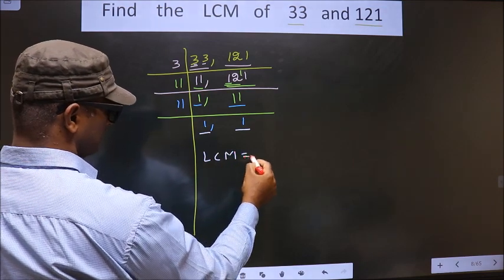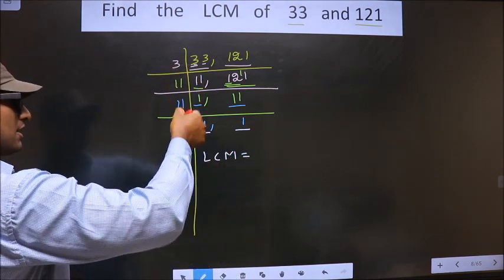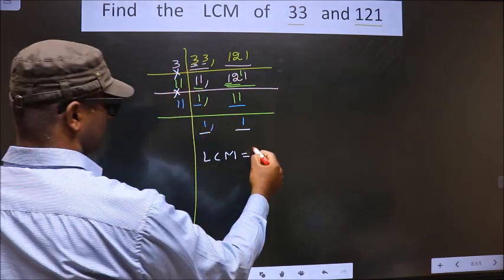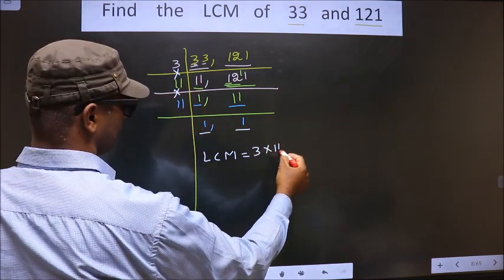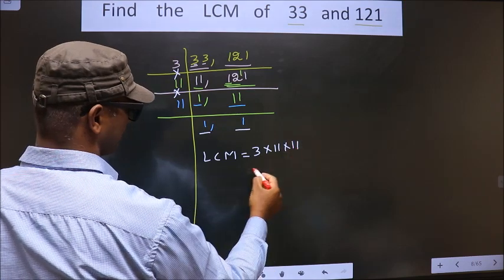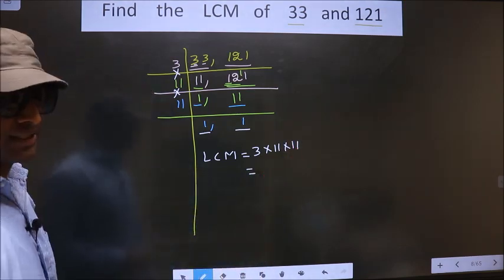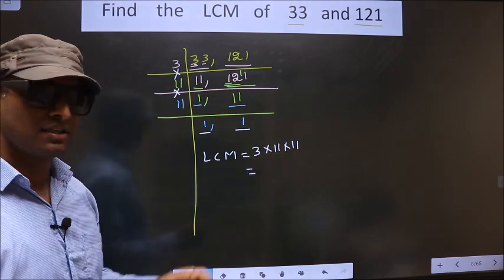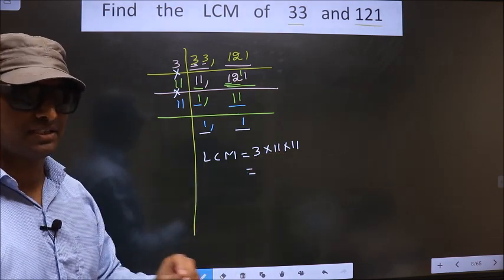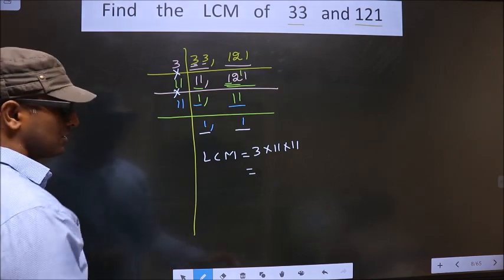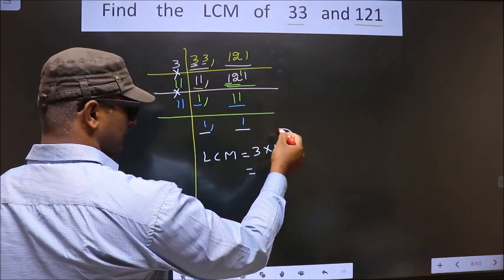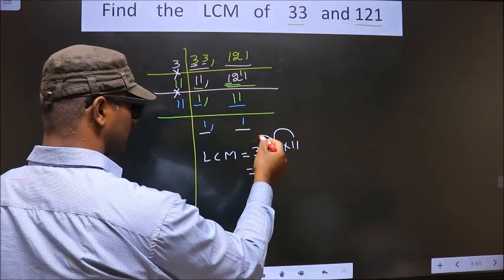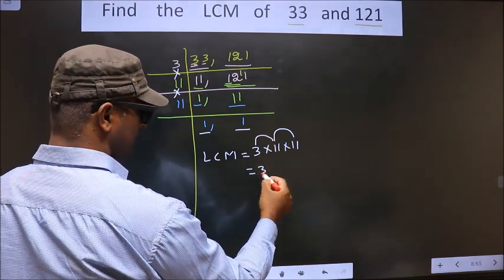Now our LCM is the product of these numbers — that is 3 into 11 into 11. Let us multiply all these numbers; whatever number you get, that will be your LCM. Now 11 into 11 is 121, and 121 into 3 is 363.